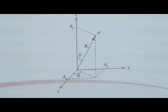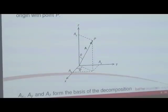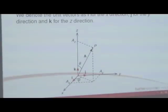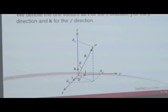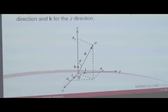We use Ax, Ay, and Az to form the basis of our decomposition. Before we can decompose this vector completely, we need to introduce the concept of unit vectors. Unit vectors are i, j, and k — they are of length 1 and they lie along the x, y, and z axes respectively. If we had a vector of 1i, the magnitude is 1 and it's lying on the x-axis. If we had a vector of 3k, that's going to be 3 up along the z-axis.